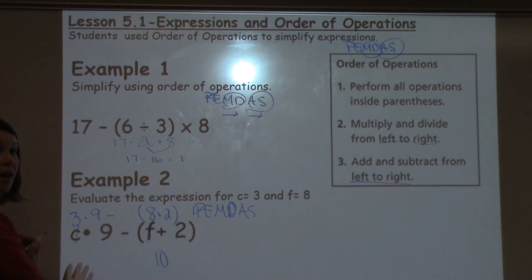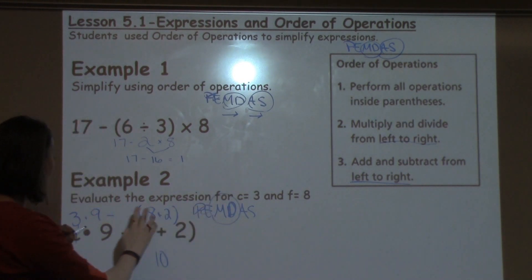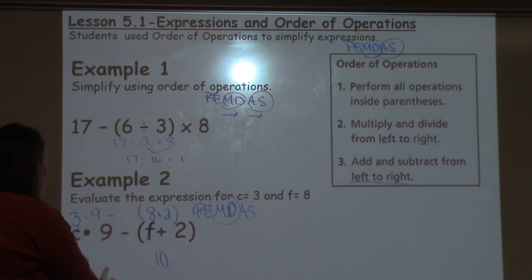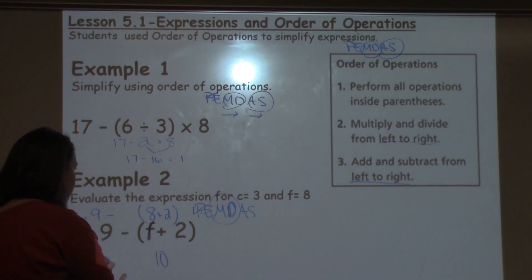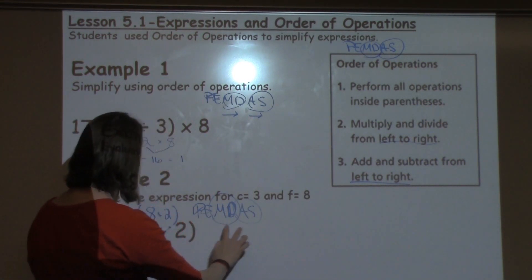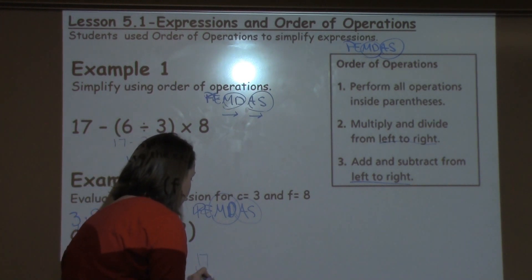Now I need to see if I have any exponents. I don't, so I can move on to my next step, which is my multiplication division. I do have some multiplication over here, which is 3 times 9, which is 27, minus 10. And then I need to see if I have any addition and subtraction. I do, I have 27 minus 10, which gives me an answer of 17.